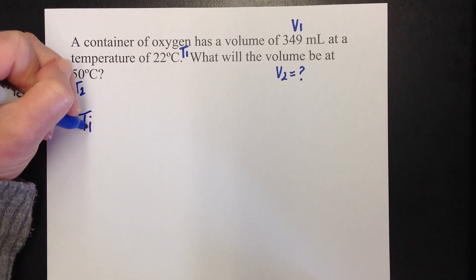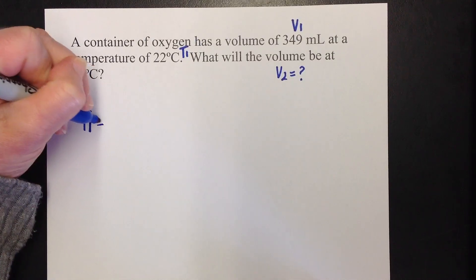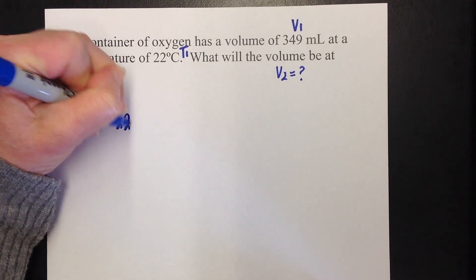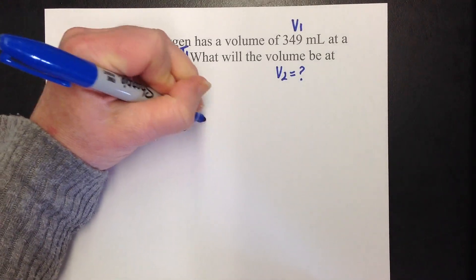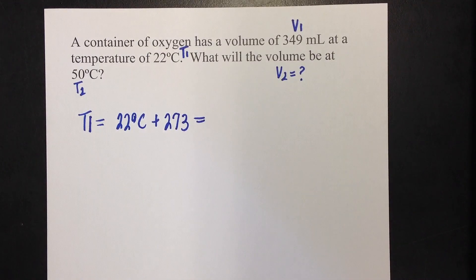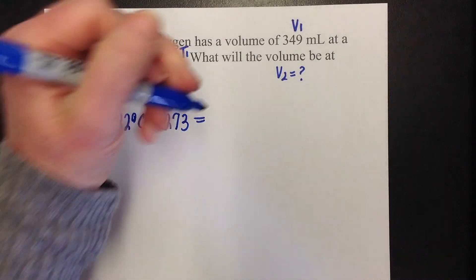So, T1 equals 22 degrees Celsius plus 273. So, let's plug that in. 22 plus 273 equals 295 Kelvin.